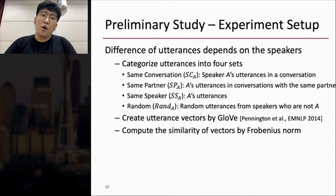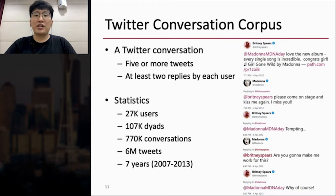Then what is the conversation corpus to do experiments? So my answer for this question is Twitter conversation corpus. A Twitter conversation is defined as five or more tweets and at least two replies by each user. So the right one shows one example of a Twitter conversation corpus. And the status of the corpus is 27k users over 770k conversations.